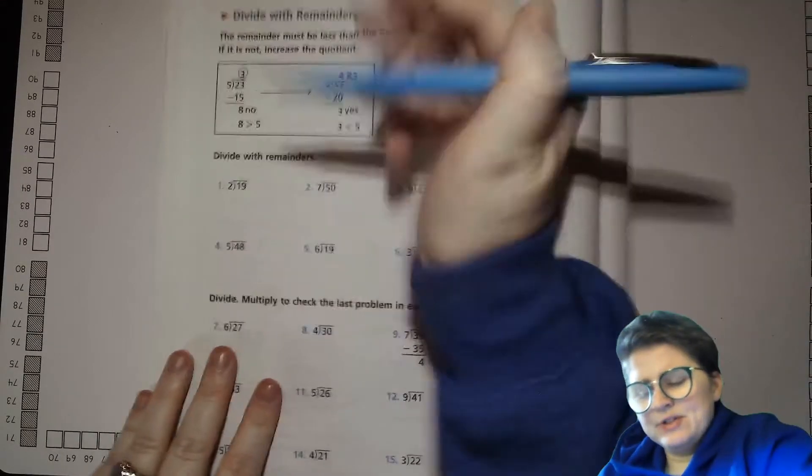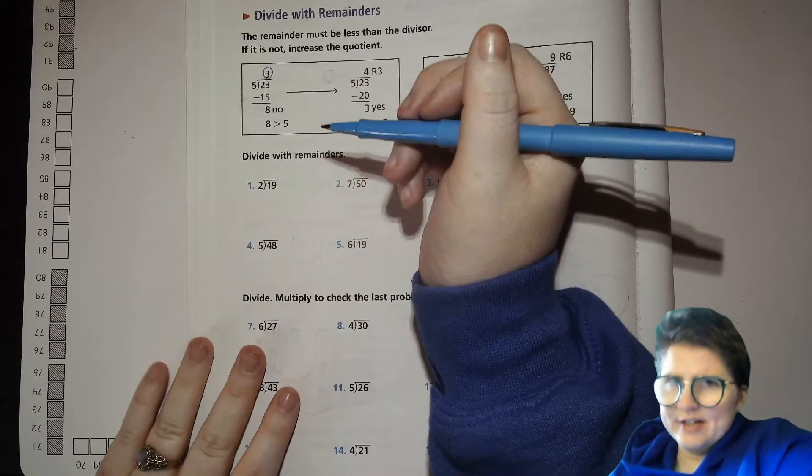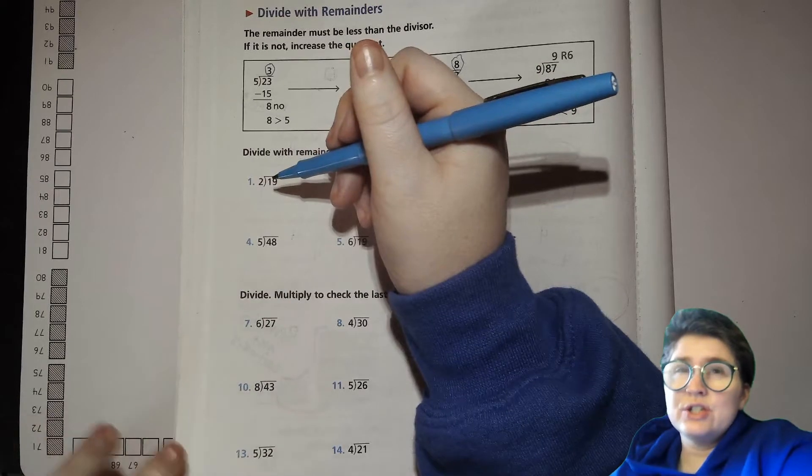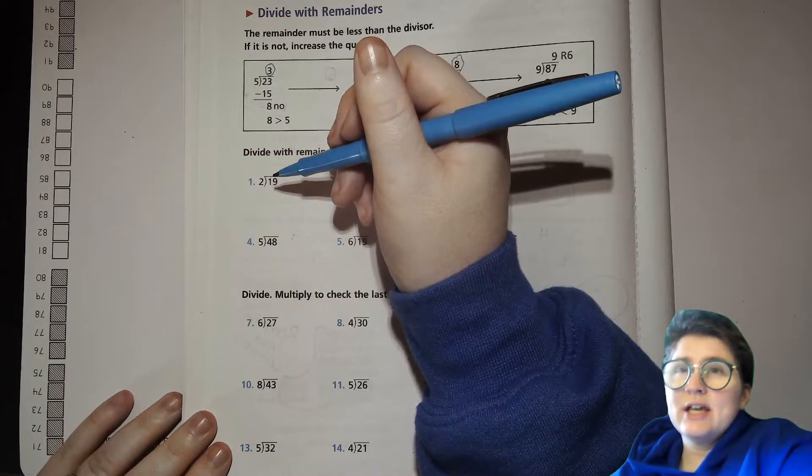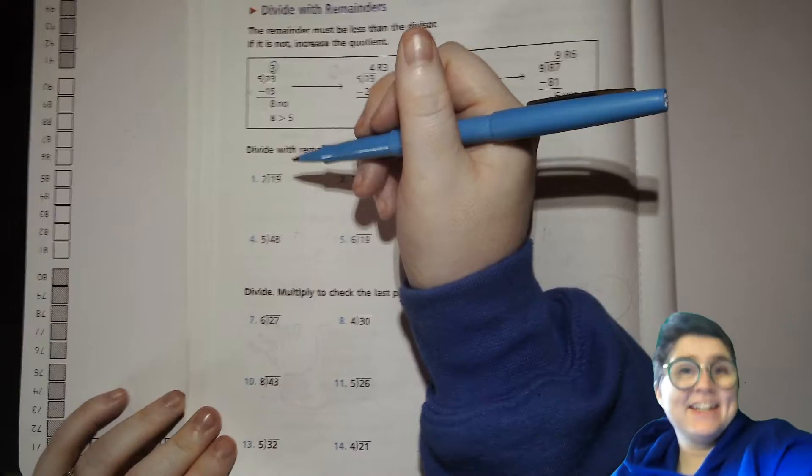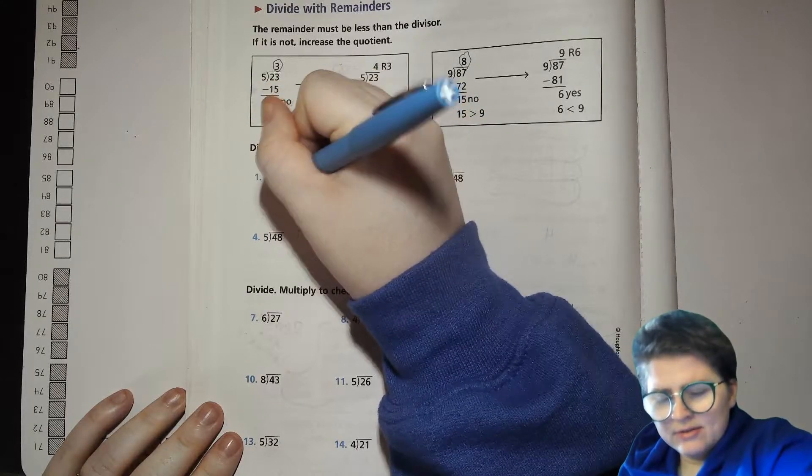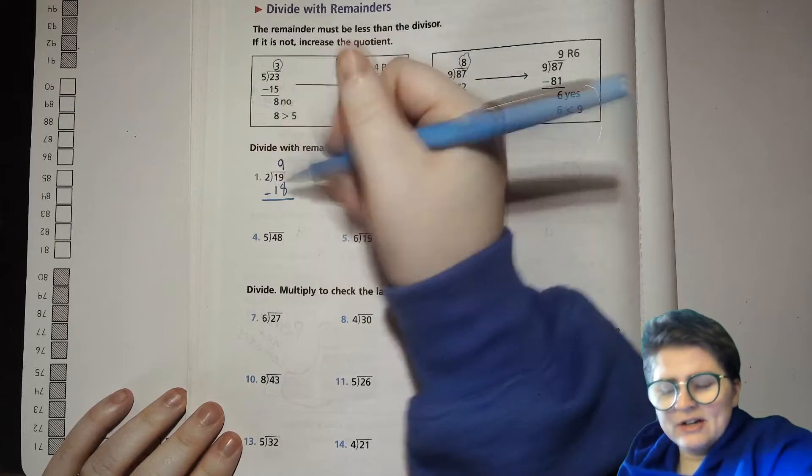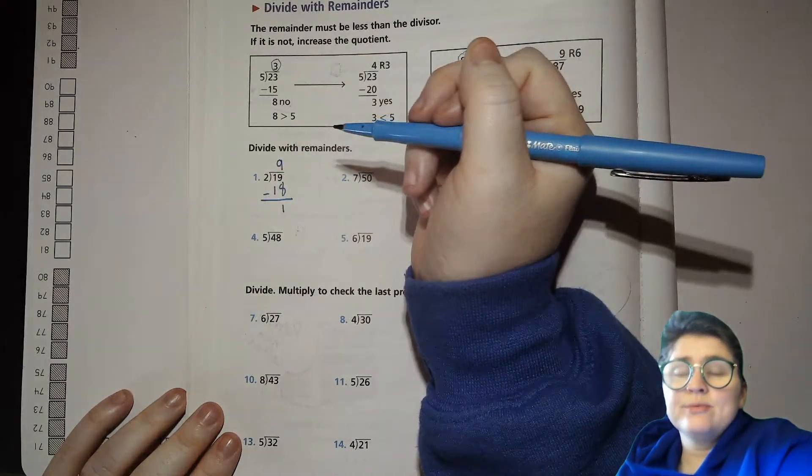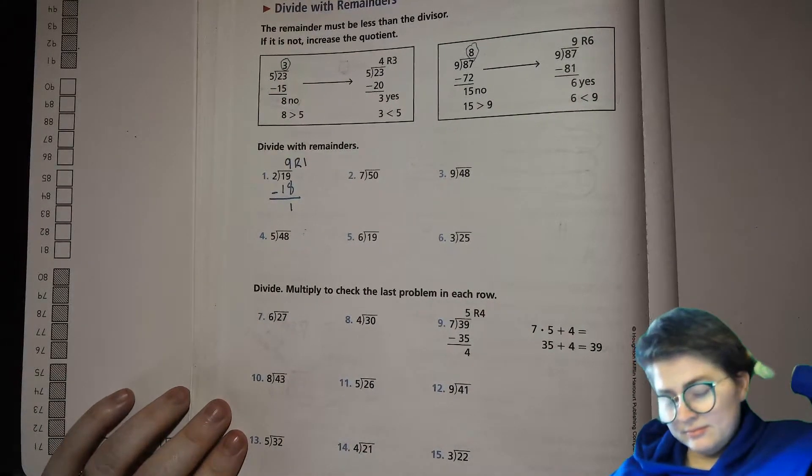Let's give it a shot. So, 19 divided by 2. Well, 20 divided by 2 is 10, but that's too high. 16 divided by 2 is 8. Let's try, what can you multiply by 2 to get 18? That's pretty close, right? And that's an even number. You can multiply it by 9. 2 times 9 is 18. Then you find the difference between 19 and 18. It's just 1. Is 1 a smaller number than 2? Yes, it is. So, it is an okay remainder to have.